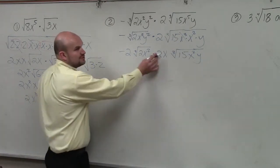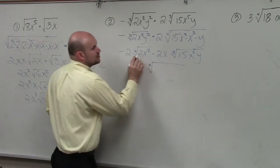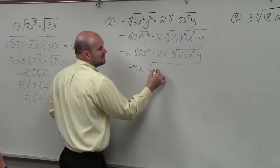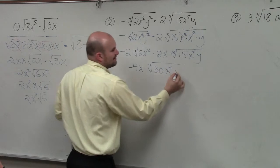So negative 2 times 2x is a negative 4x times the cube root. 2 times 15 is 30. x squared times x squared is x to the fourth. And then I have a y.